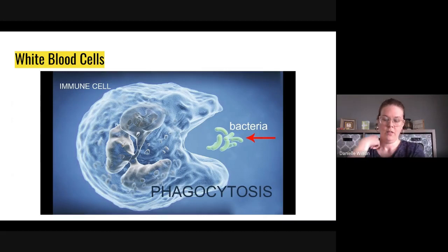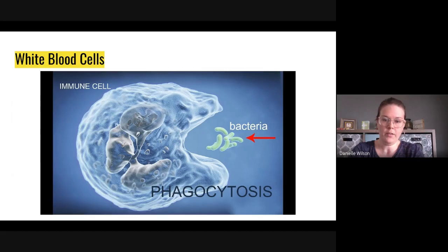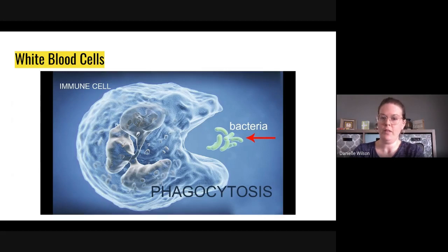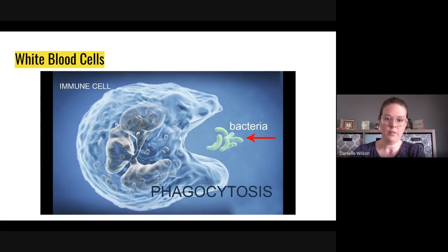Lysosomes would break down the bacteria, and then exocytosis would spit the waste particles back out. In the book there's a whole section about endocytosis — phagocytosis is a type of endocytosis — and when it spits things back out, that would be exocytosis. Other cells like liver and kidney cells are specialized to process and excrete all the waste particles from the body.